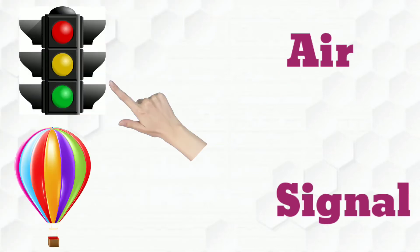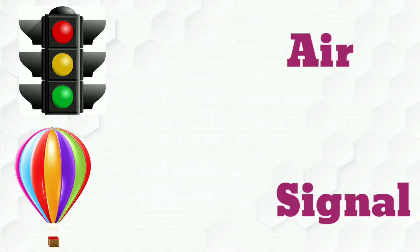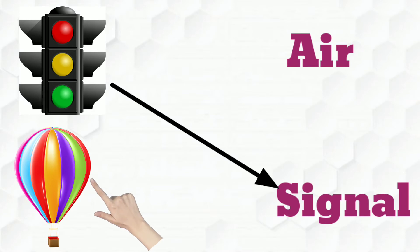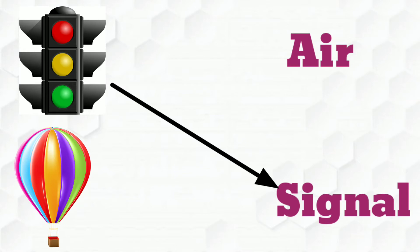Next, see the fifth picture. What is this? Yes, very good — signal. So we have to connect signal to the picture. See the last picture. What is this? Yes, very good — hot air balloons. Where does the hot air balloon move? Yes, it moves on the air. So we have to connect hot air balloon to the air.